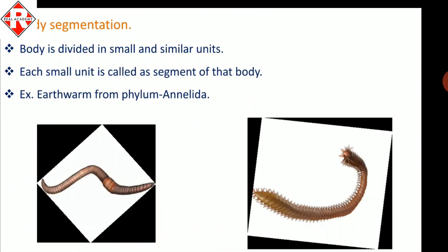The last criterion is body segmentation. The body is divided into small and similar units, each called a segment. You can see these small, similar units from the outer skin of the organism. The body is made up of many such small segments. An example is the earthworm from phylum Annelida. Based on all these factors — grades of organization, body symmetry, germ layers, body cavity, and body segmentation — animals can be classified.